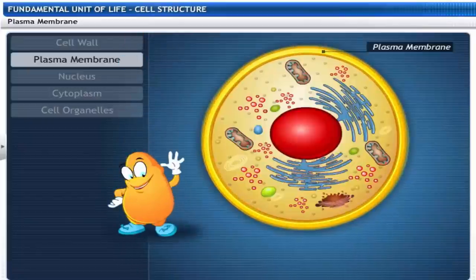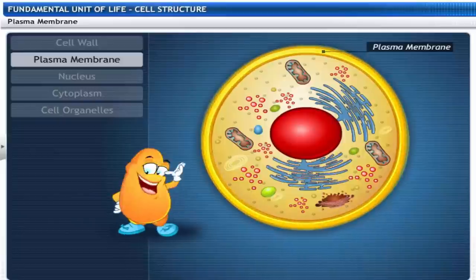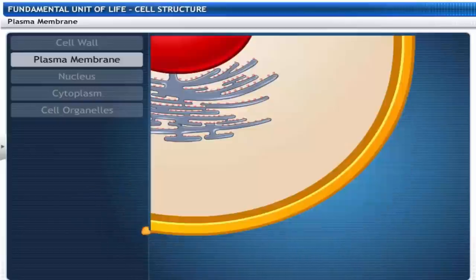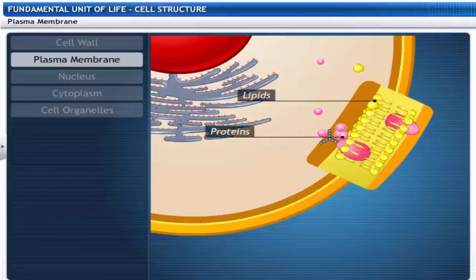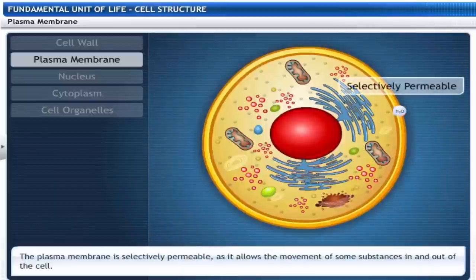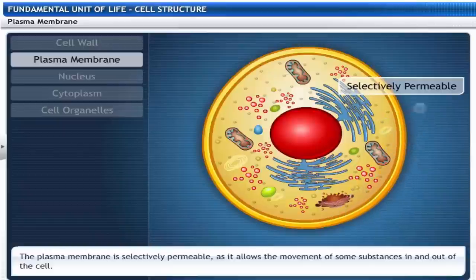Let's take a closer look at the next membrane called the cell membrane or the plasma membrane. It is a living membrane made of lipoproteins. The plasma membrane is selectively permeable as it allows the movement of some substances in and out of the cell.